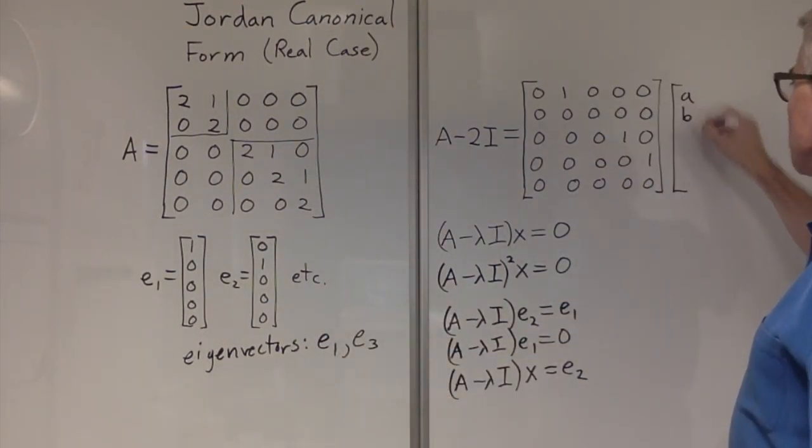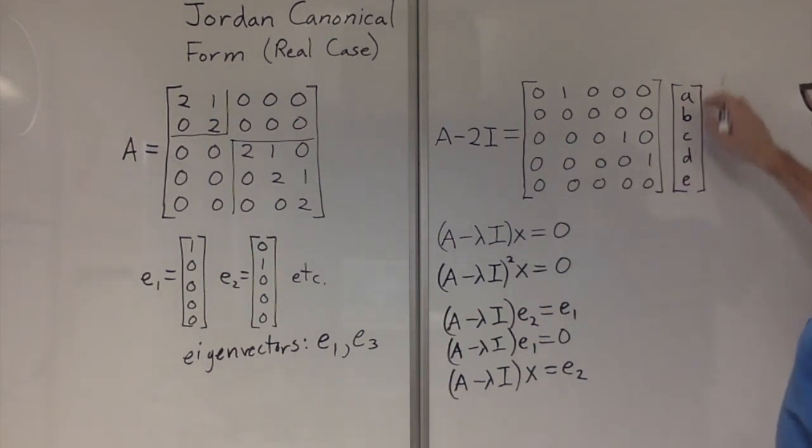If we multiply A minus lambda I by ABCDE, in this particular case, it gives us B, 0, D, E, 0.